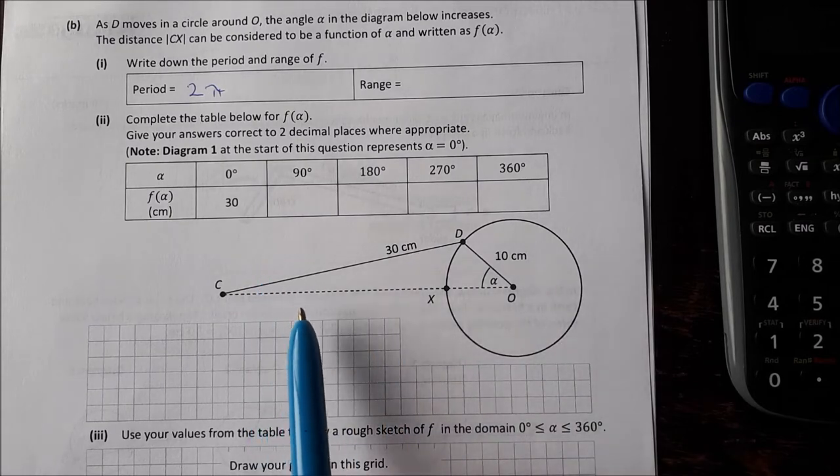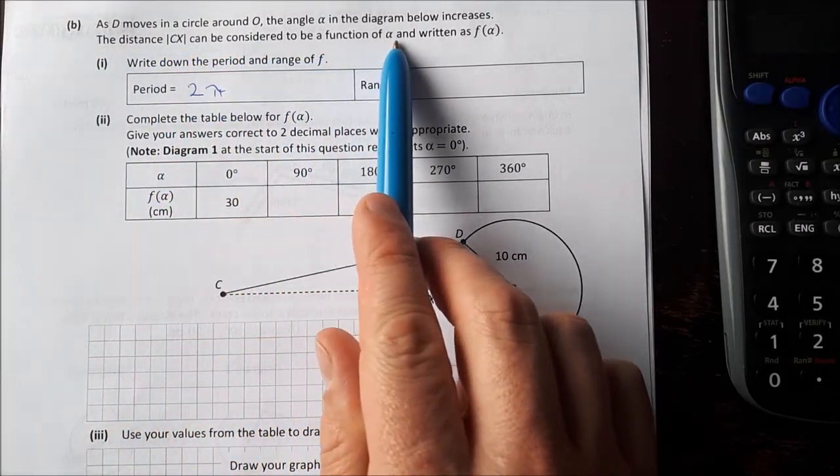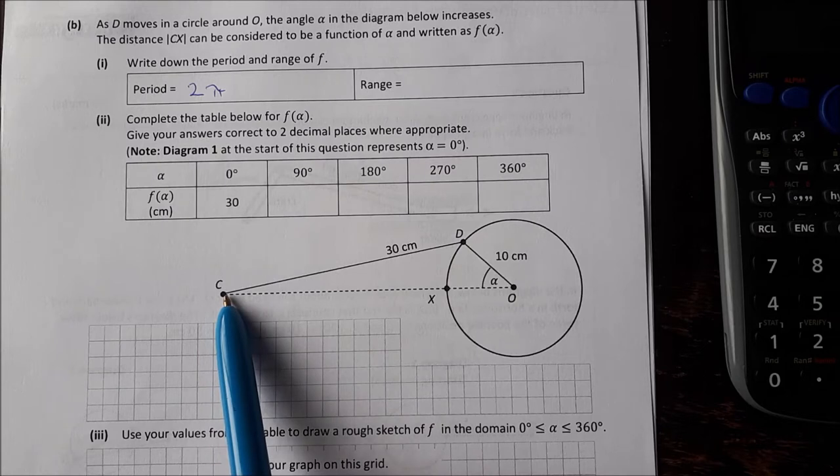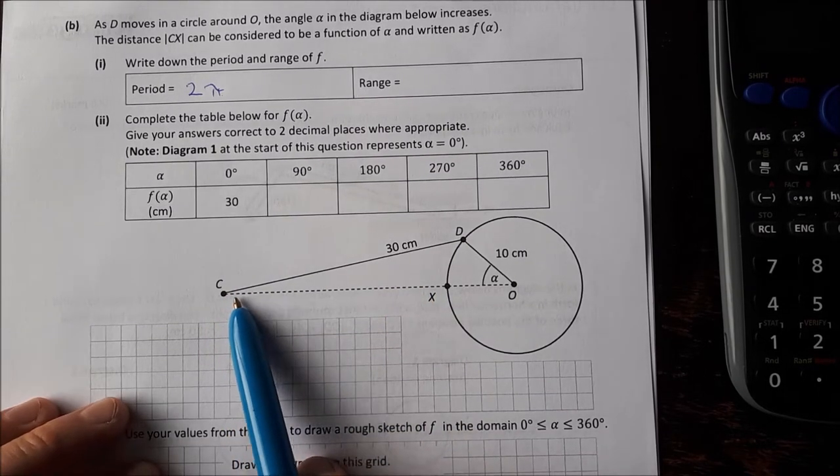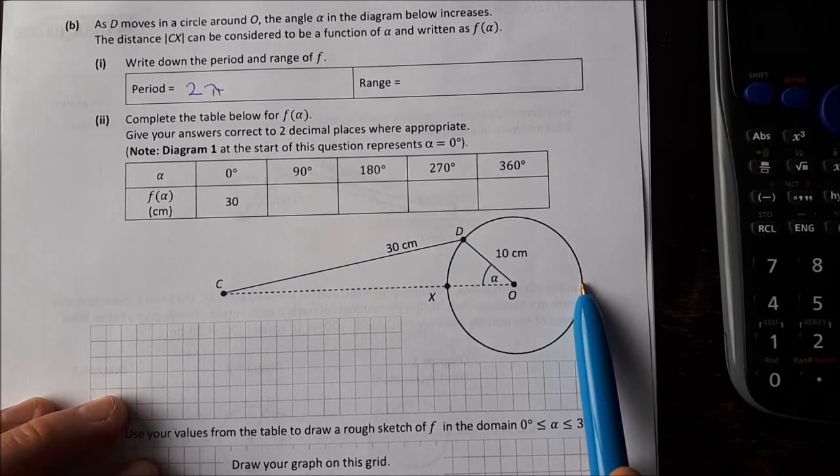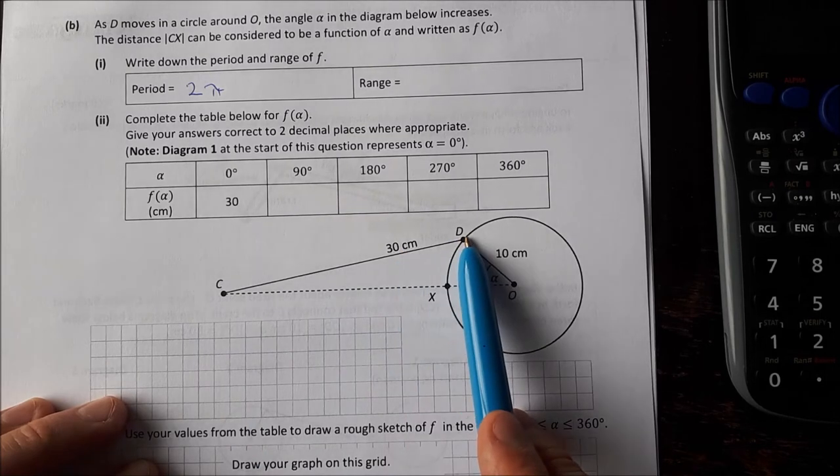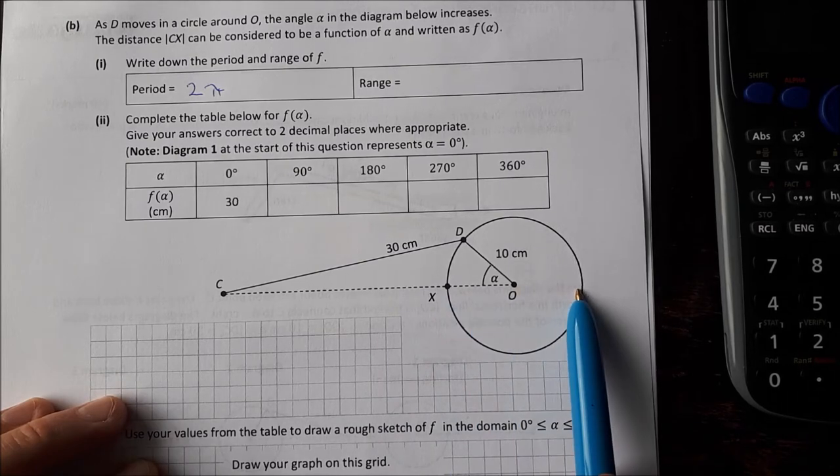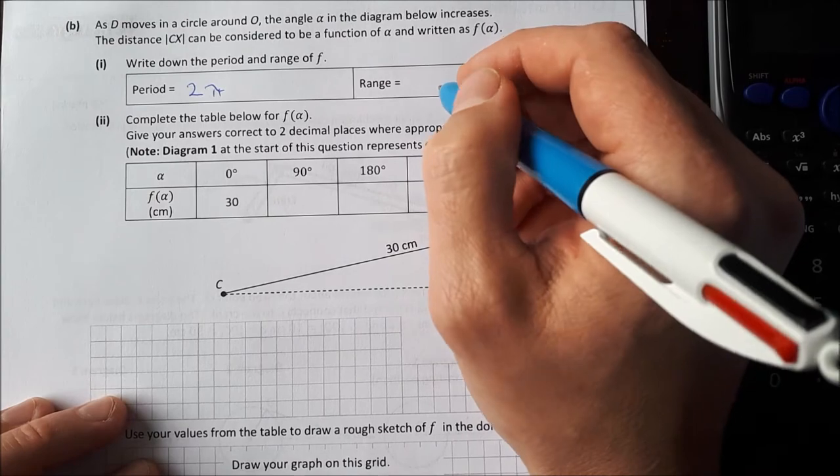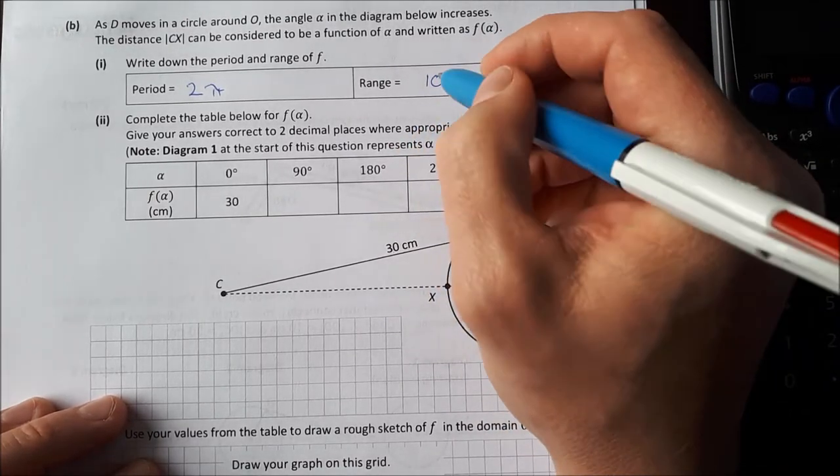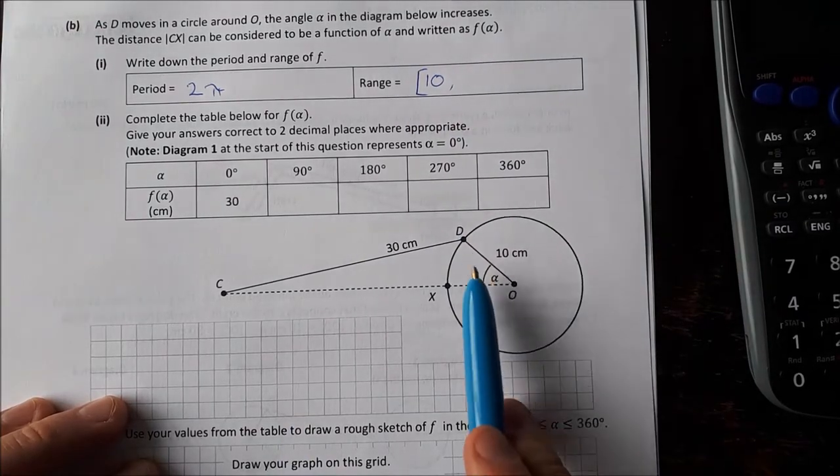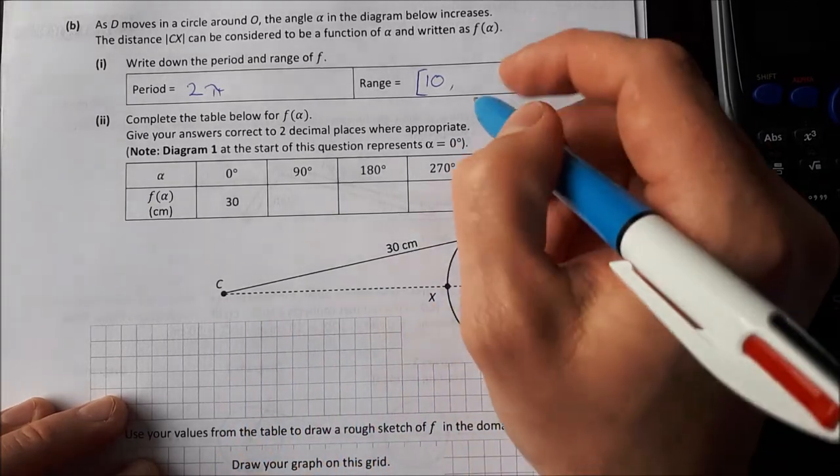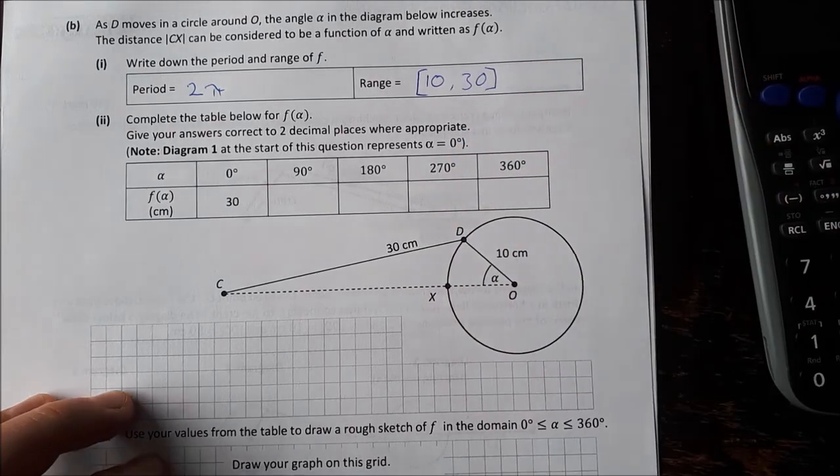For the range, the distance CX can be considered to be a function of alpha, so the range of F is the range of distances that CX can be. The smallest CX could be is when the point D is all the way over here and that would mean if this is 30 we'd have 30 altogether minus the 20 which is the diameter of the circle, so we'd have 10. The longest CX can be is if point D was down here and then you'd have the full 30 cm out there, so the range is 10 to 30.